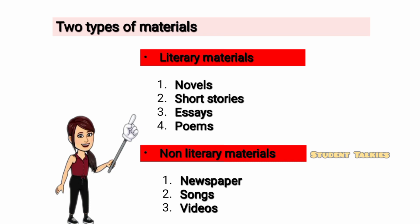There are two types of materials: literary materials and non-literary materials. Literary materials include novels, short stories, essays, and poems. Non-literary materials include newspaper, songs, and videos.